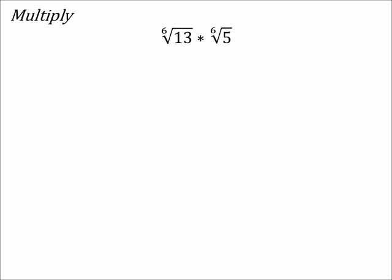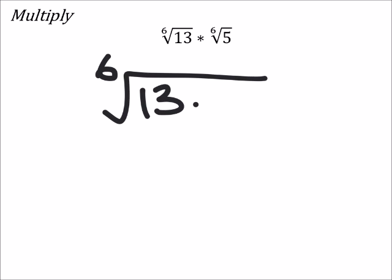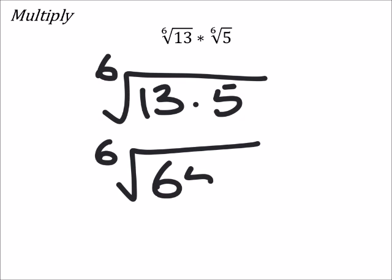So applying this rule, since they're both under the sixth root, we can just do the sixth root of 13 times 5, which would be the sixth root of 65.